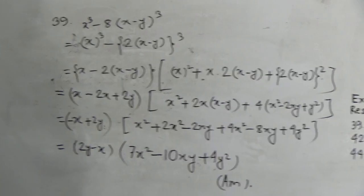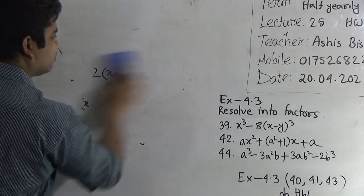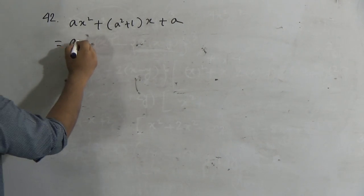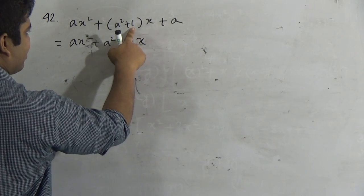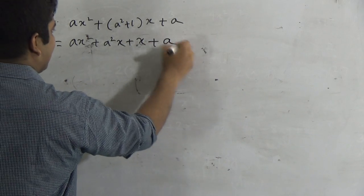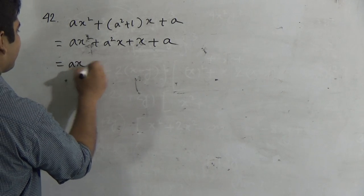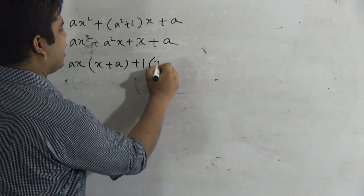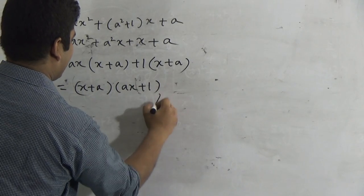Next we shall solve an easy math, which is question number 42. Question 42 is: ax² + (a² + 1)x + a. We expand: ax² plus a²x plus x plus a. We take ax common from ax² and a²x, leaving x and a. Then from plus x and plus a we take 1 as common, leaving (x plus a). From the whole expression, (x plus a) is common and we are left with (ax plus 1). So the answer is (x plus a)(ax plus 1).